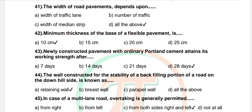Question 44: The wall constructed for the stability of a back-filling portion of a road on the downhill side is known as — options: retaining wall, breast wall, parapet wall, all of the above. Correct answer: retaining wall.